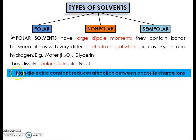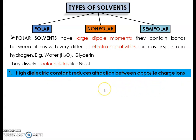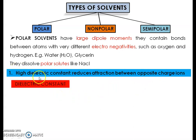The first mechanism is that polar solvents have a high dielectric constant. Because they have a high dielectric constant, they reduce the attraction between oppositely charged ions, and as that attraction decreases, solubilization occurs. But first, we need to understand what a dielectric constant actually is — we will look at this with an animation.